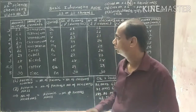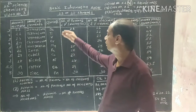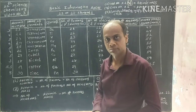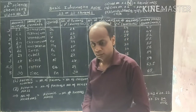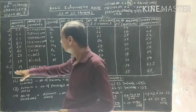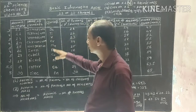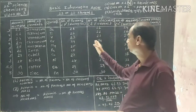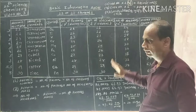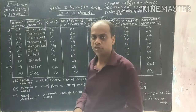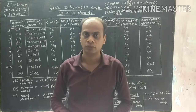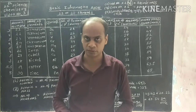So in video number 3 we have discussed about elements 21 to 30. For homework, prepare elements 1 to 30 with their atomic number, name, symbol, number of protons, number of electrons, number of neutrons, and molar mass — and be ready for video number 4. Thanks for watching video number 3.